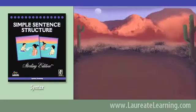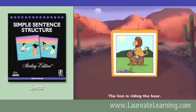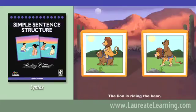Here's an example of subject-object reversal, the most challenging of the four contrasting sentence sets that are used in this program. Here the lion is riding the bear. Find the lion is riding the bear. Good!